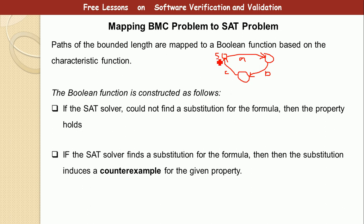So this path, let's say I label this path A, this path is B, and this path is C. Let's say this is s1, and this is s2, and this is s3. So how do we convert the bounded model checking of this problem to a SAT problem? And we say that the path has to be mapped to Boolean function based on a characteristic function. Now what is a characteristic function? We are going to look at it later. But it's a function of the path.